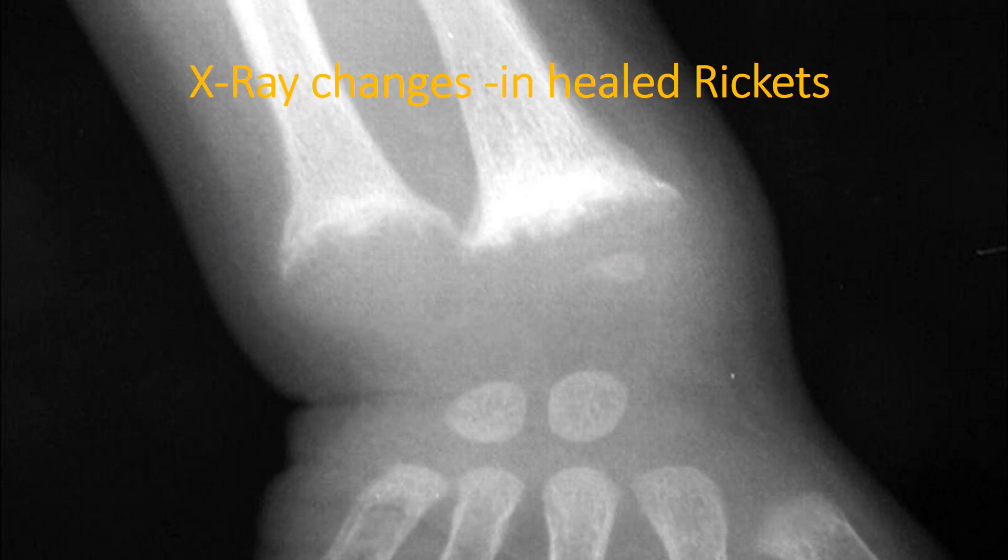Whenever a patient presents with characteristic features of rickets clinically and on x-ray, we consider the most common cause to be vitamin D deficiency in children less than 6 months of age, and calcium or vitamin D deficiency later on. We give a therapeutic dose of vitamin D, and after 4 weeks we repeat the x-ray. If the patient had vitamin D deficiency, characteristic x-ray changes of healed rickets will be present.